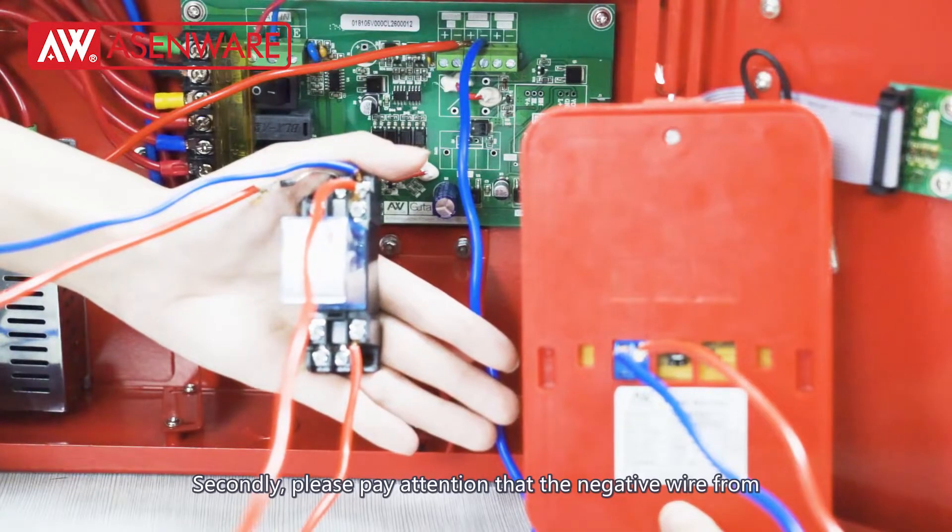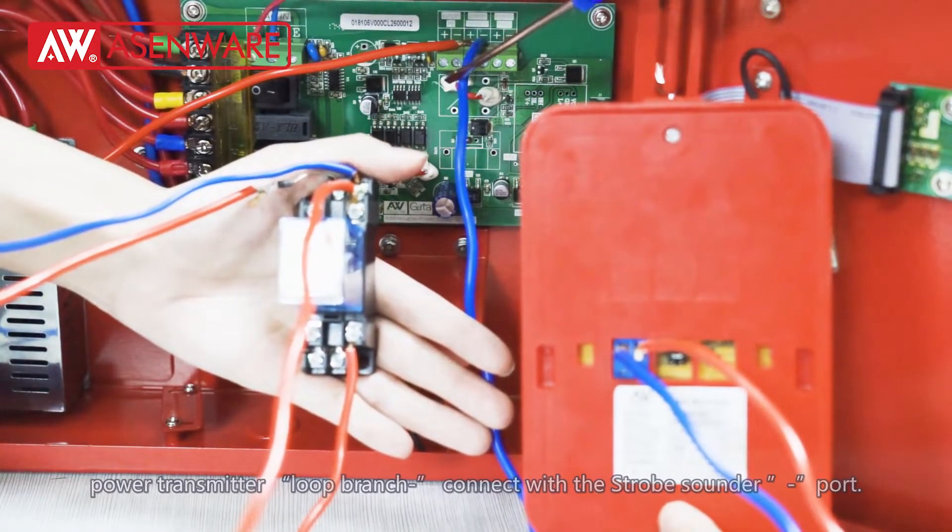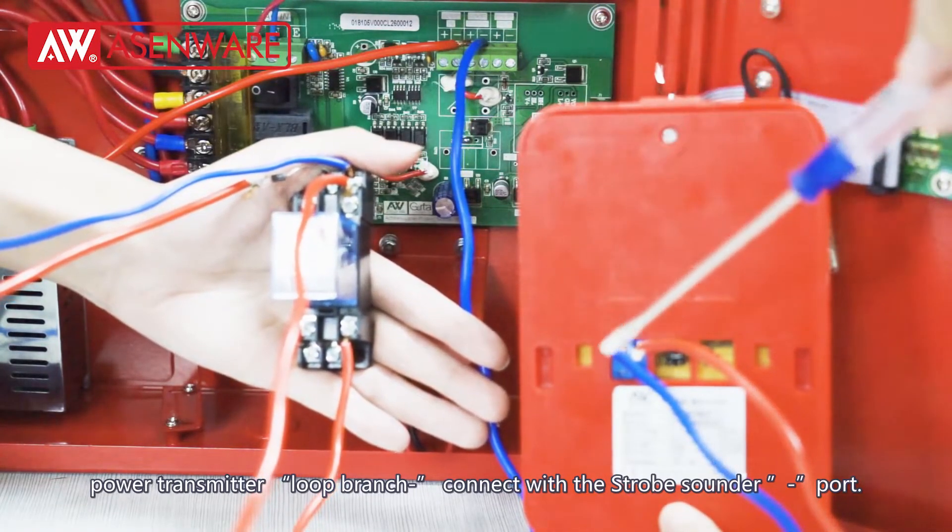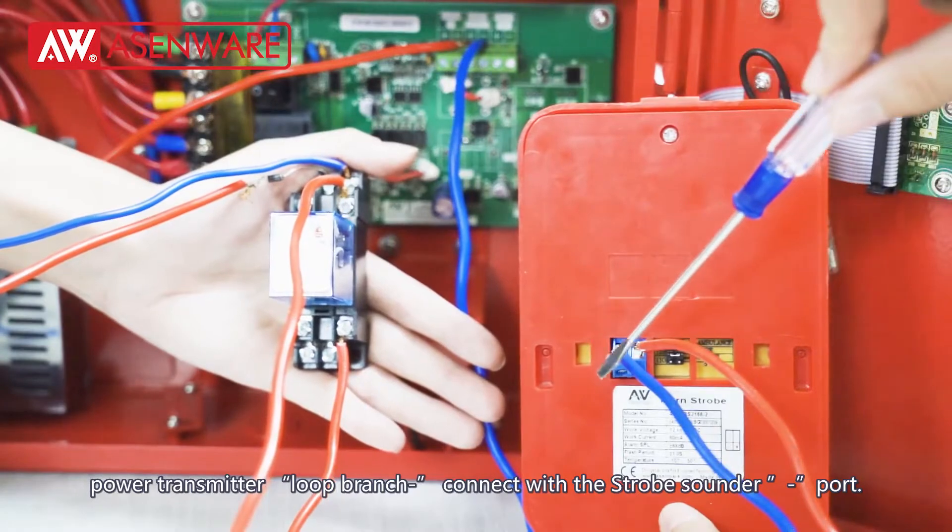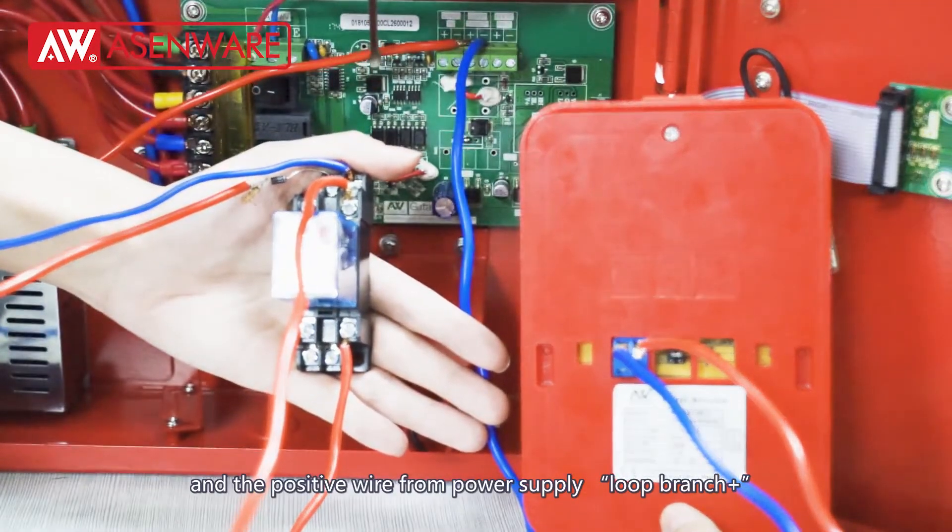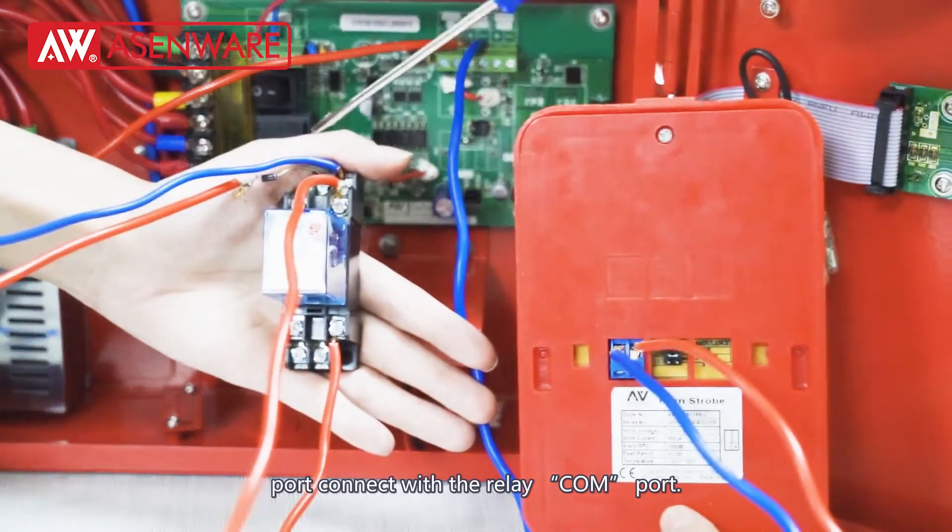Secondly, please pay attention that the negative wire from the power transmitter loop branch negative port connects with the strobe sounder negative port, and the positive wire from the power supply loop branch positive port connects with the relay's common port.